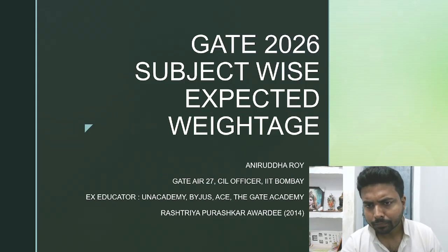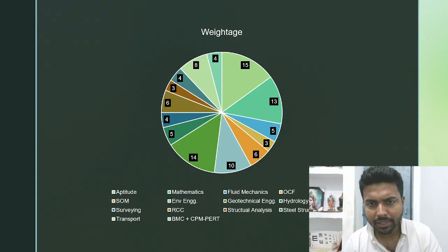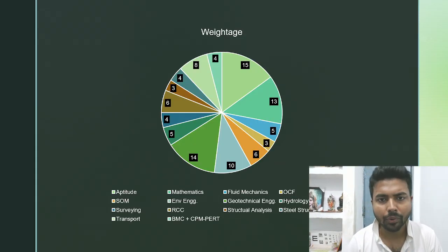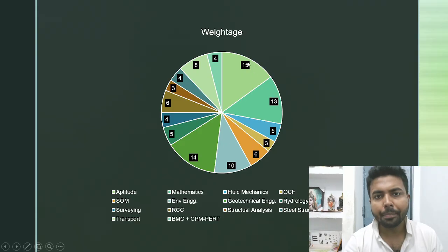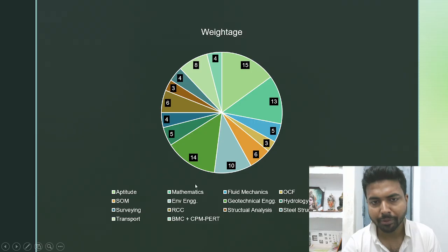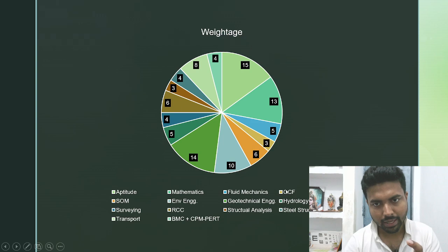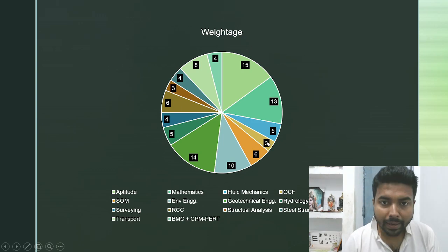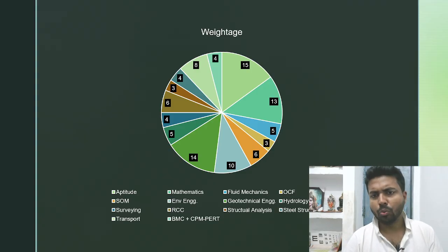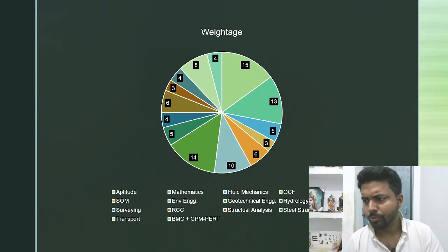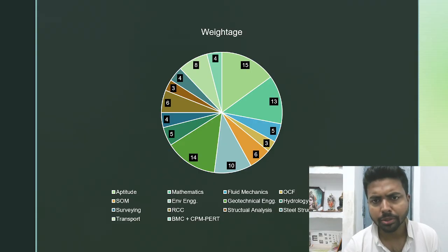So let's have a look at it. I have presented it in the form of a pie chart to help you out. Aptitude is fixed at 15 marks, followed by 13 marks for engineering mathematics. Coming to fluid mechanics — fluid mechanics except open channel flow is 5 marks, and open channel flow is 3 marks. Mainly fluid mechanics: 2 two-mark questions and 1 one-mark question, and open channel flow: 1 two-mark question and 1 one-mark question.